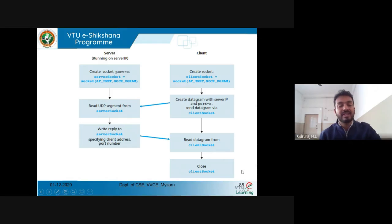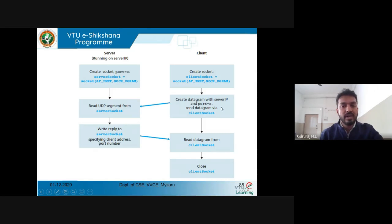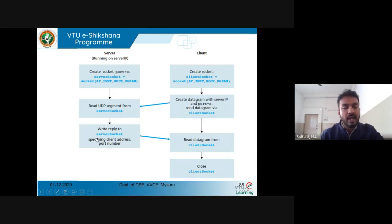We'll see how it exactly works with the help of a Linux environment with an example — I'll show you the execution. The overall picture: the client will send a request. Before that, UDP was created with the help of a UDP socket. With the help of client socket and server socket, they will have a connection. Once after creating the server socket, it will send a request for reading or writing. After reading and writing the data, they close the communication.